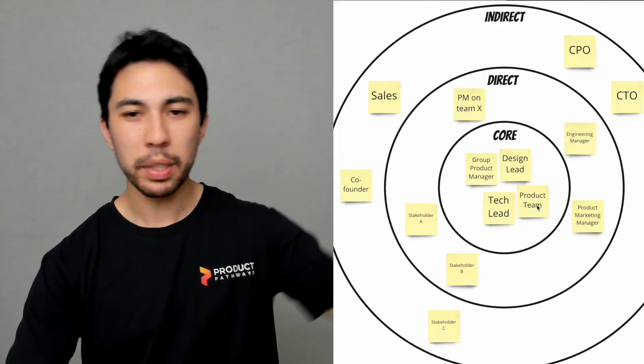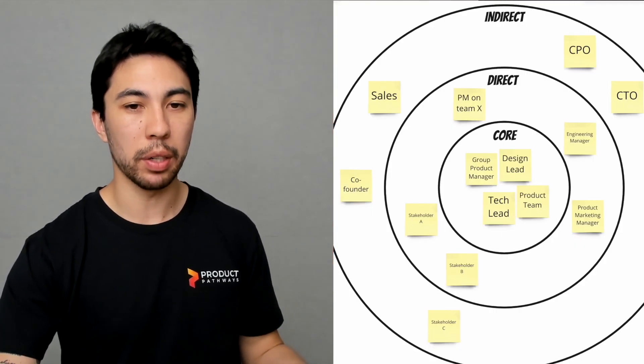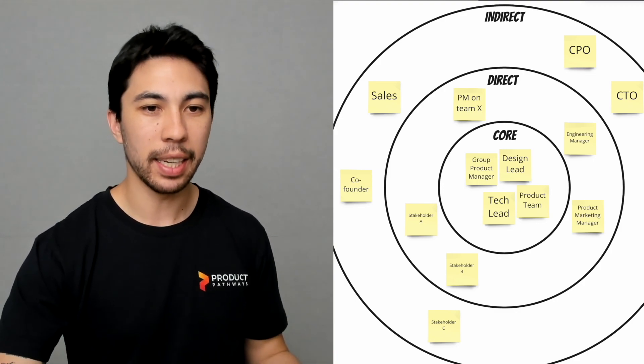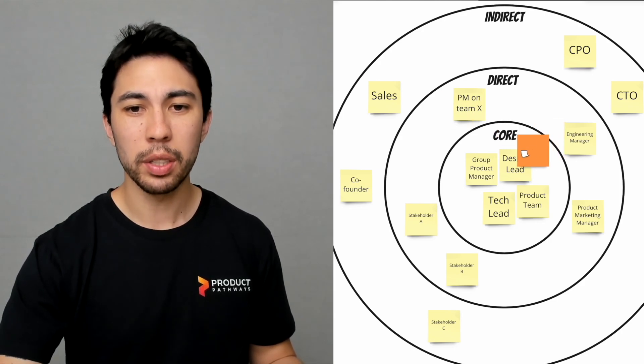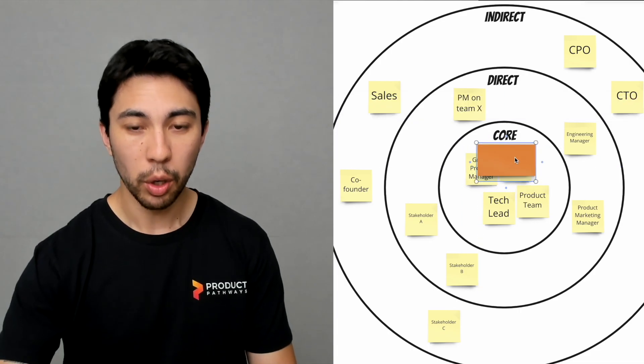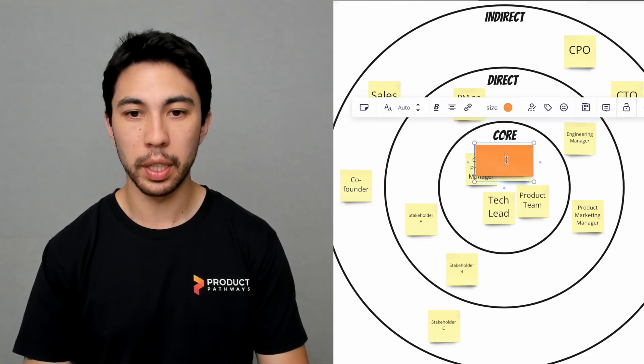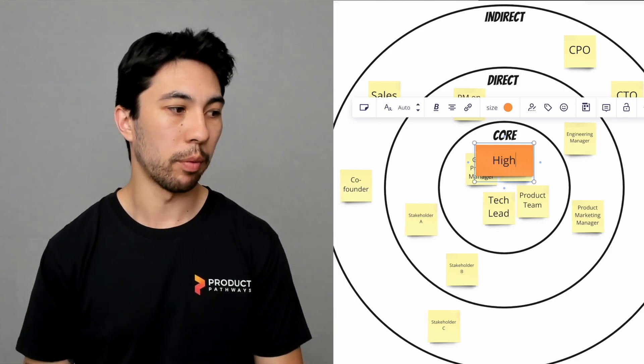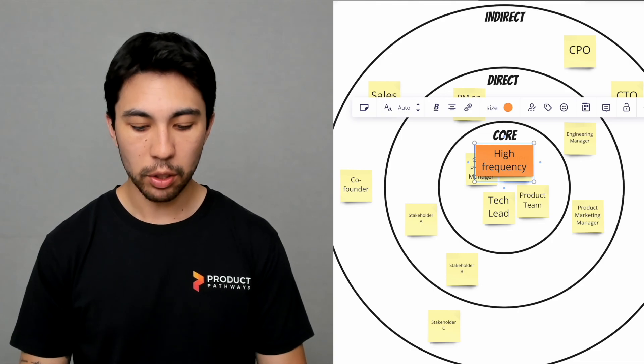The other thing that is really powerful is when we start to think about our stakeholders in these tiers. People down here in the core tend to be stakeholders that are directly involved all the time, so we want to have a high frequency when it comes to building a relationship with them. We want to be meeting with them regularly. This also means the relationship that we have with them is really important; it's integral to our success, so we also want it to be high touch.